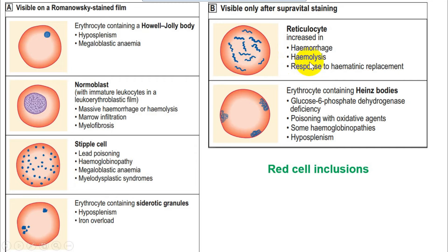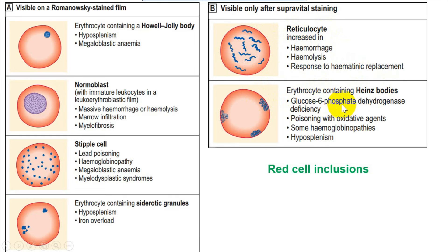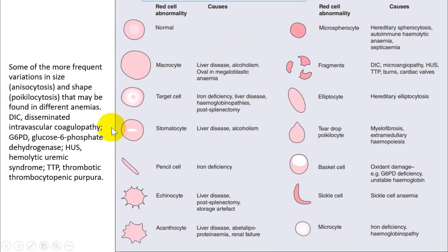Reticulocytes — immature red blood cells — are increased in hemorrhage, hemolysis, or in response to hematinic treatment replacement. For example, if a patient has iron deficiency anemia and we replace iron, bone marrow will start producing red blood cells and reticulocyte count will increase. This is how we know whether treatment is working. Heinz bodies are denatured hemoglobin, seen in G6PD deficiency. All of these findings are seen in peripheral smear.